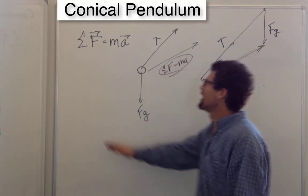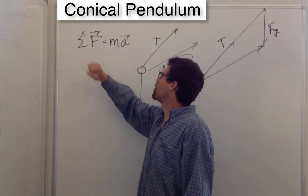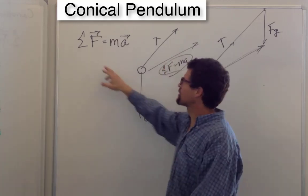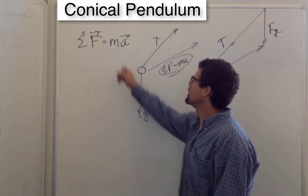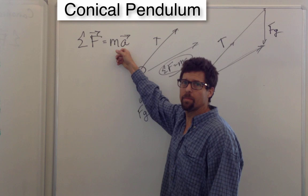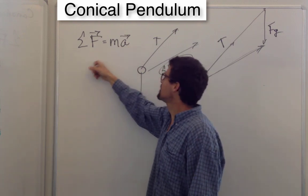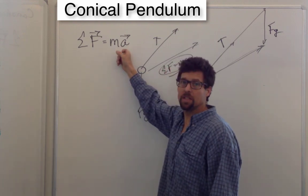Why did I do this? Because all of these dynamic problems boil down to the same thing. The vector sum of the forces, and a force is an interaction between two bodies, is equal to mass times acceleration. What are the directions of the forces? What is the direction of the acceleration?